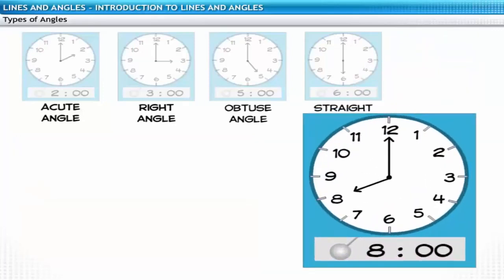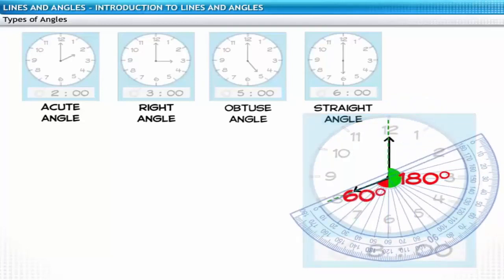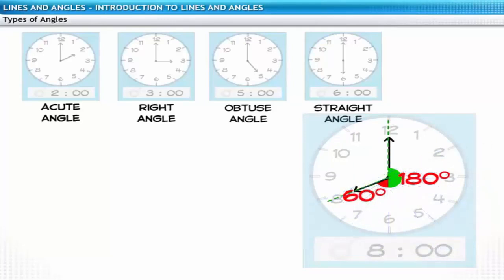Let's measure the angle formed by the rays when it is 8 o'clock. To measure an angle greater than 180 degrees, first take a straight angle and then add the remaining angle to it. Now, when you measure the angles, it is 180 degrees plus 60 degrees, which is 240 degrees.